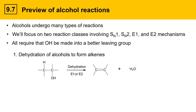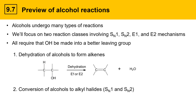Here the water atoms come from the OH and the adjacent beta proton. We'll cover dehydration reactions extensively in subsequent videos. The next class of reactions we'll look at are conversion of alcohols to alkyl halides using either SN1 or SN2 reactions.